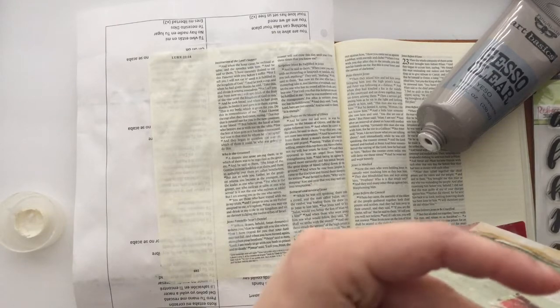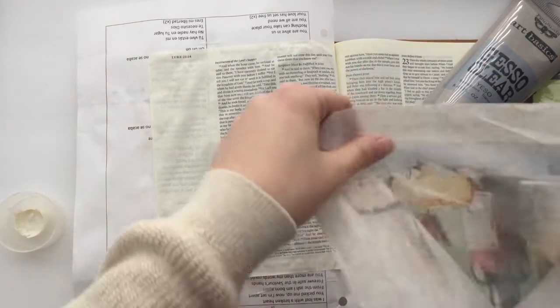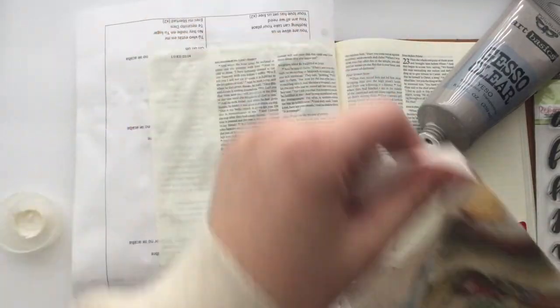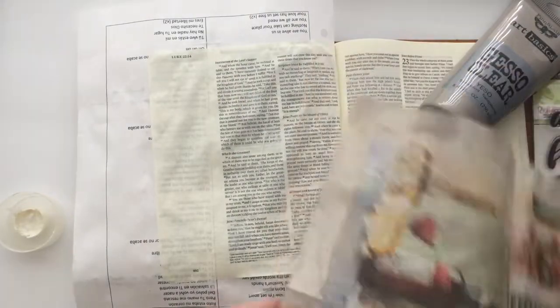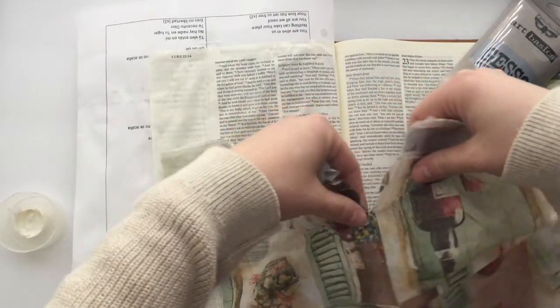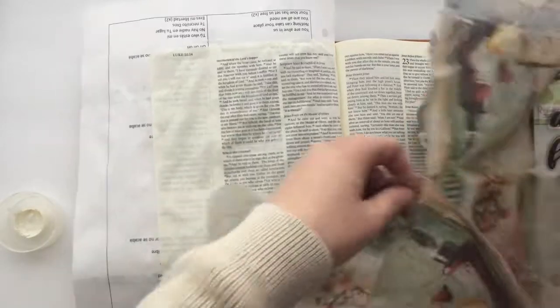So that's one mistake that I did on this page. But this napkin I got at a Bible journaling retreat I went to in Savannah, Georgia with Sweet and Sassy Stamps.